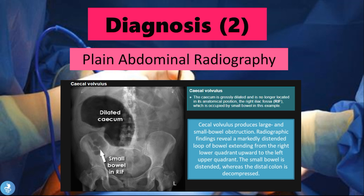A plain abdominal radiograph can be helpful in diagnosing a cecal volvulus. The cecum is grossly dilated and is no longer in its anatomical position in the right iliac fossa — instead, the right iliac fossa is now occupied by small bowel. The dilated, distended cecum has pushed its way up into the abdomen. Radiographic findings reveal a markedly distended loop of bowel extending from the right lower quadrant upward to the left upper quadrant. The small bowel is distended, whereas the distal colon is decompressed.